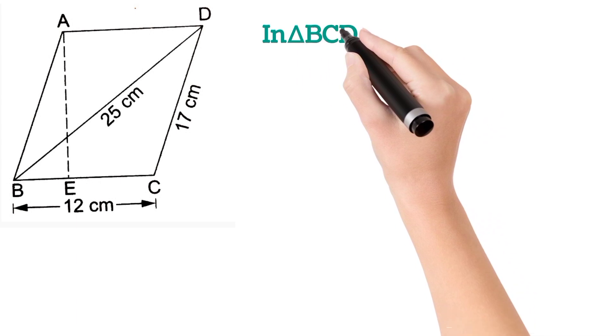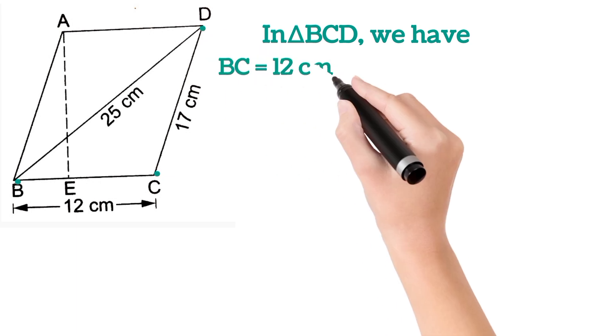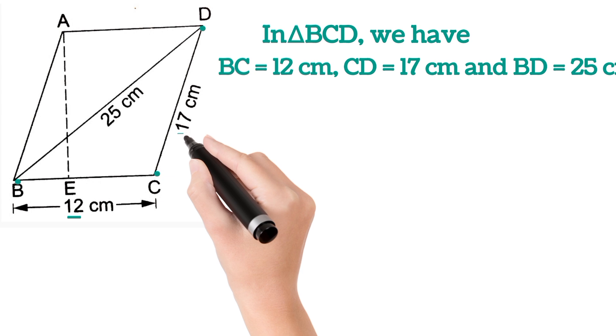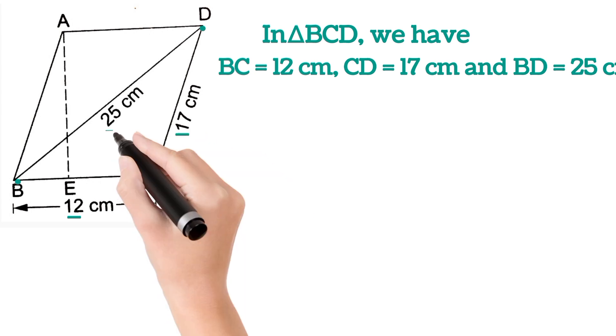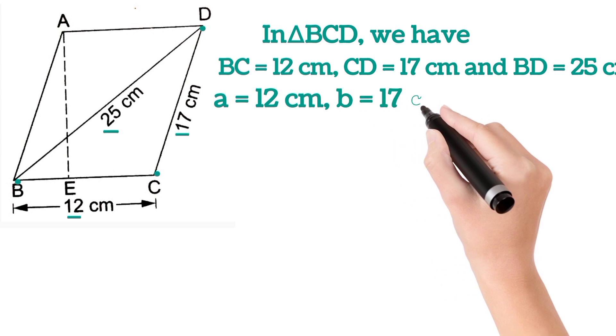Now in triangle BCD, we have BC is 12, it's given in the question, and CD is 17, and BD is 25 centimeters. So let's assume a is 12, b is 17, and c is 25. These are the sides of the triangle.